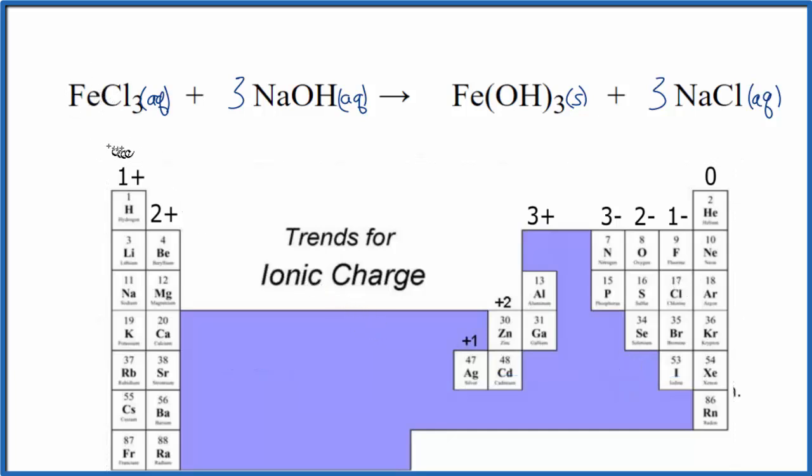So iron transition metal, we don't know that. But chlorine has a minus one or one minus, I should say. There's three of them, so this has to be three plus. Sodium, group one, one plus right here.